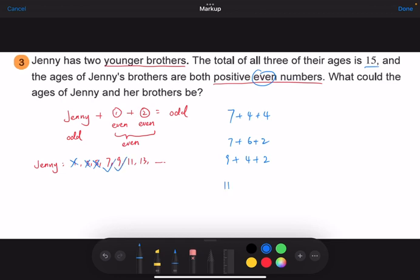And then 11. So if Jenny is 11 years old, the two numbers should add up to four. Because 15 minus 11 is four. So 11 plus two plus two. This also works. Again, we cannot plus two or minus two again. Because that will generate a zero. And also zero is not a positive number. So we won't consider zero.